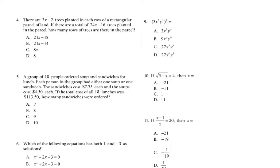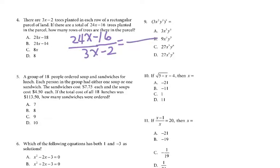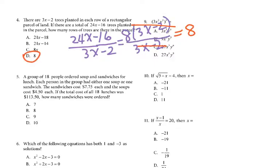For question 4, there are 3x minus 2 trees planted in each row of a rectangular parcel. If there are a total of 24x minus 16 trees planted in the parcel, how many rows of trees are there? We divide 24x minus 16 by 3x minus 2. For 24x minus 16, the common factor is 8, giving 8 times (3x minus 2). Dividing by (3x minus 2), the answer reduces to 8. D is the answer.